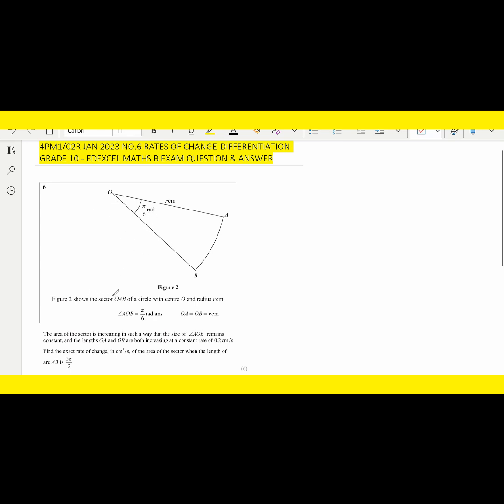Figure 2 shows sector OAB of a circle with center O and radius R. Angle OAB is π/6 radians, OA equals AB equals R. The area of the sector is increasing in such a way that the size of angle OAB remains constant and the lengths of OA and OB are increasing at a constant rate of 0.2 cm per second. Find the exact rate of change in cm² per second of the area of the sector when the length of arc AB is 5π/2.